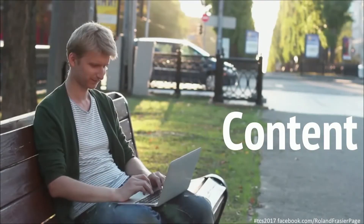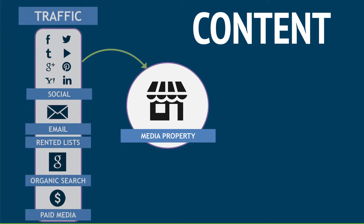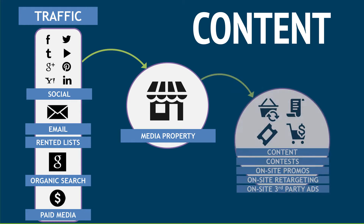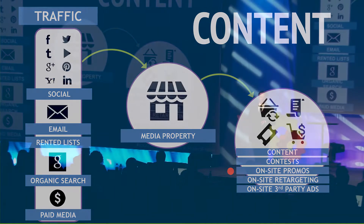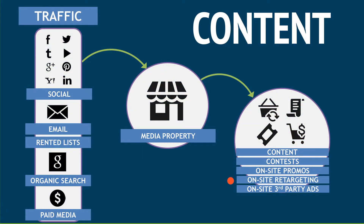This is how content works for us. We have a media property like Survival Life or GunCarrier.com or MakeUpTutorials.com. We send traffic to it, and then that traffic on the site goes to a bunch of different places. It might go to additional content, contests to grow our list, on-site promos to generate revenue, on-site retargeting sending people back to offers they're interested in, or third-party ads.